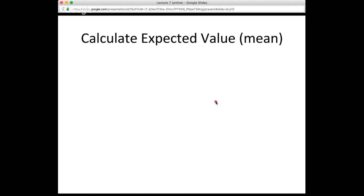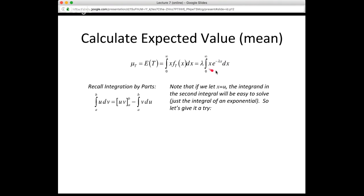The next thing to calculate is the expected value, which is the mean, denoted by mu. It's also called the expected value of the random variable T, calculated by taking the first moment of the PDF — multiplying x times the PDF and integrating. Substituting our exponential PDF, lambda pulls out and we're left with x·e^(−λx) in the integrand, integrated from zero to infinity. This integral is not immediately obvious.